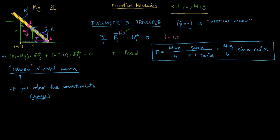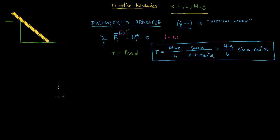Let's delete all this and start from scratch. This is R prime, this is MG, R, and G. Now suppose we fix this point and decide to rotate the rod a little bit in that direction. If we call this point 1 and this point 3, then changing the constraints means the rod doesn't have to stay against the wall anymore — that is what I mean by changing or relaxing the constraints.